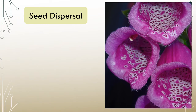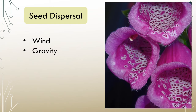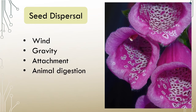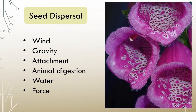Now we know that plants can disperse their seeds in many different ways. Some rely on the wind to carry their seed far away, some rely on gravity, some seeds are designed to attach themselves to animal fur, and some are eaten by animals. Some seeds rely on water, and some use force to push their seeds far away.